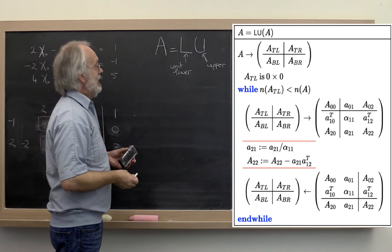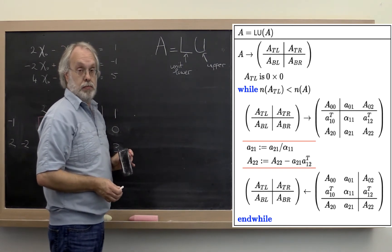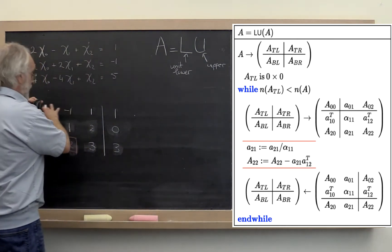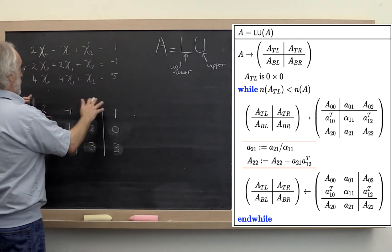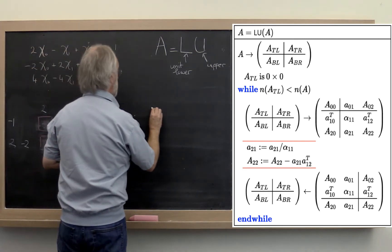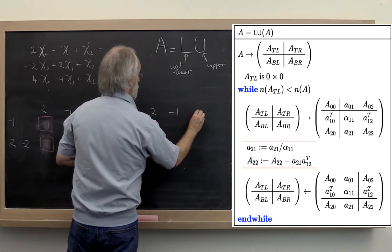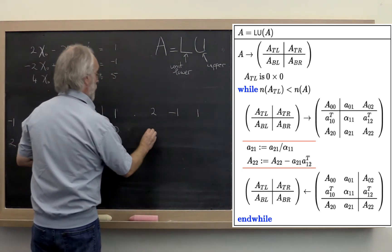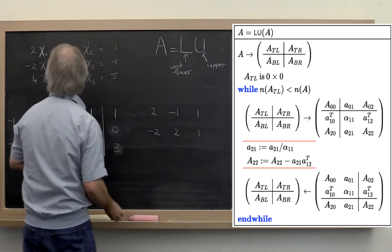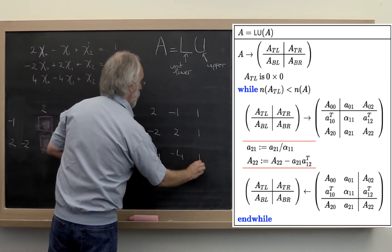Now let's execute the algorithm and see what happens. We're going to execute it on the matrix A that's sitting right here. Let's recreate it. That matrix was 2, minus 1, 1, minus 2, 2, 1, and 4, minus 4, 1.